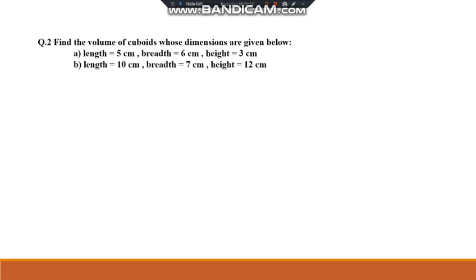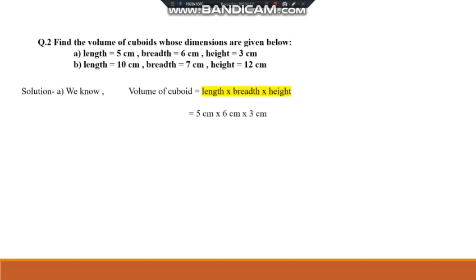Question number 2: find the volume of cuboids whose dimensions are given. In a cuboid, length, breadth, and height are different. Question (a): length is 5 cm, breadth is 6 cm, and height is 3 cm. Using the formula, volume of cuboid = length × breadth × height = 5 × 6 × 3. Since 5 × 6 = 30 and 30 × 3 = 90, the answer is 90 cubic cm.